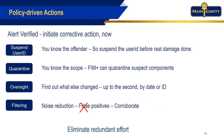FIM Plus also allows you to take policy-driven actions in an automated manner. Once you've verified you have a real alert, you can get into action right away — perhaps suspend the user ID or quarantine the components that are a problem. The oversight report shows everything that changed in a given interval. Filtering provides noise reduction, and the overall functionality of FIM Plus probably prevents a lot of false positives from other tools by corroborating the information they're providing.